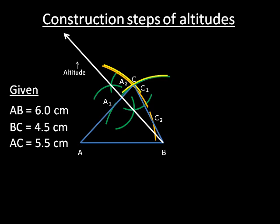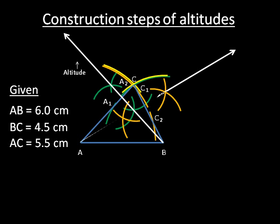Put the pointer of compass at point C1 and take a radius of more than half of the distance between C1 and C2, and draw arcs above and below the line BC. Then without changing the radius of the compass, put the pointer at point C2 and draw arcs above and below the line BC intersecting the previous arcs. Then with the help of a ruler, draw a straight line passing through the intersecting points of these arcs connecting to point A. This is an altitude towards the line BC.